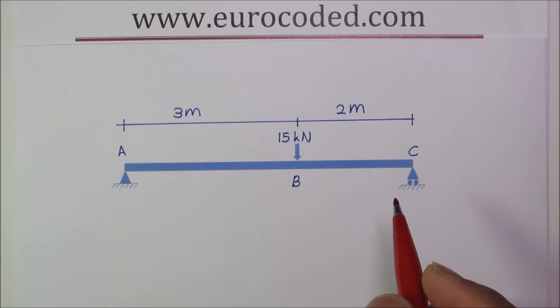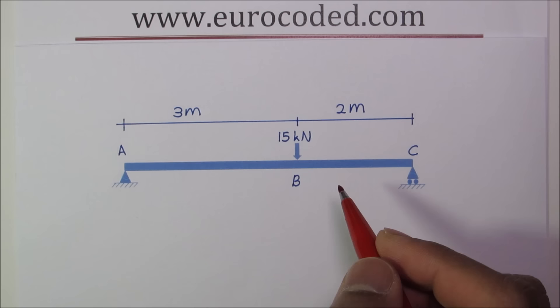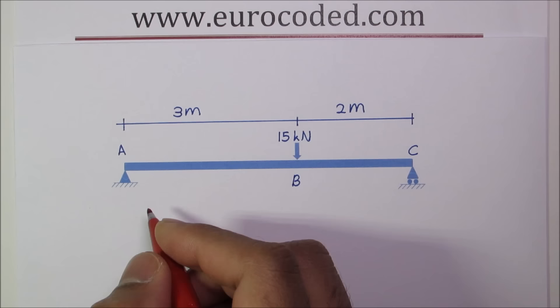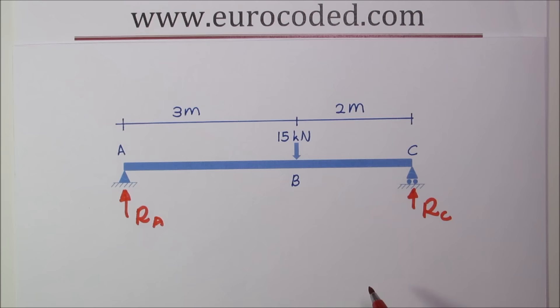It is simply supported with a roller support at this end. We only have one vertical load applied onto the beam at B. Hence we would only have vertical reactions at A and C. If I note them as RA and RC then we can begin our calculations to determine the reactions at supports.